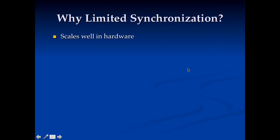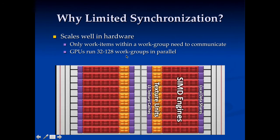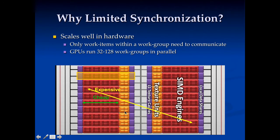Why do we have this limited synchronization? Basically because it scales well. You only need to communicate within a work group — no global communication required. This is very important because GPUs run hundreds of threads in parallel across many work groups. Looking at a schematic of an AMD GPU, it's relatively cheap to synchronize within a compute unit, but very expensive to support arbitrary synchronization anywhere on the chip. That's why this limitation exists.